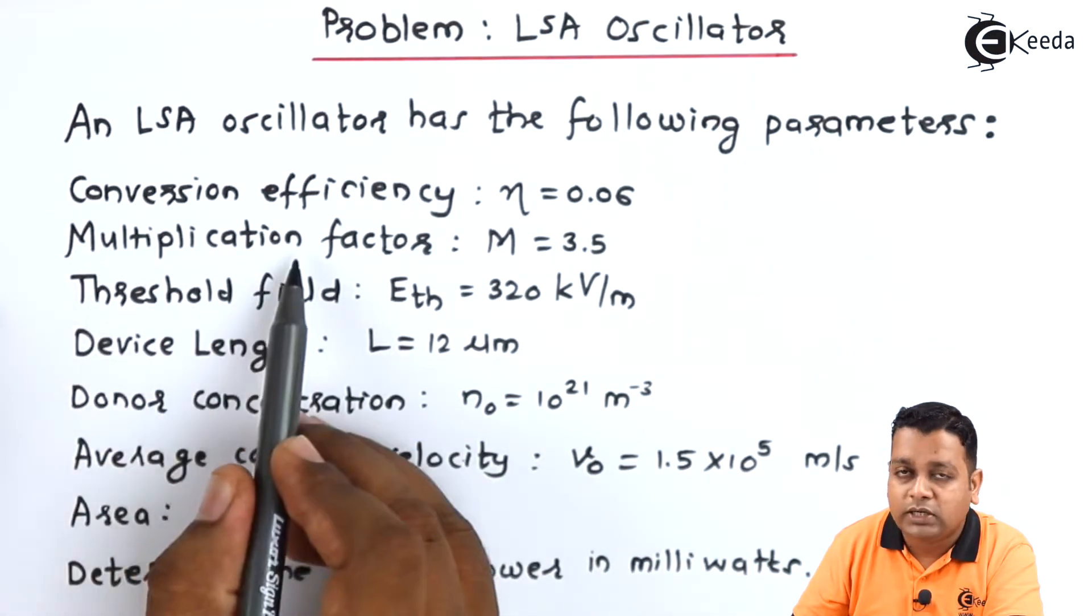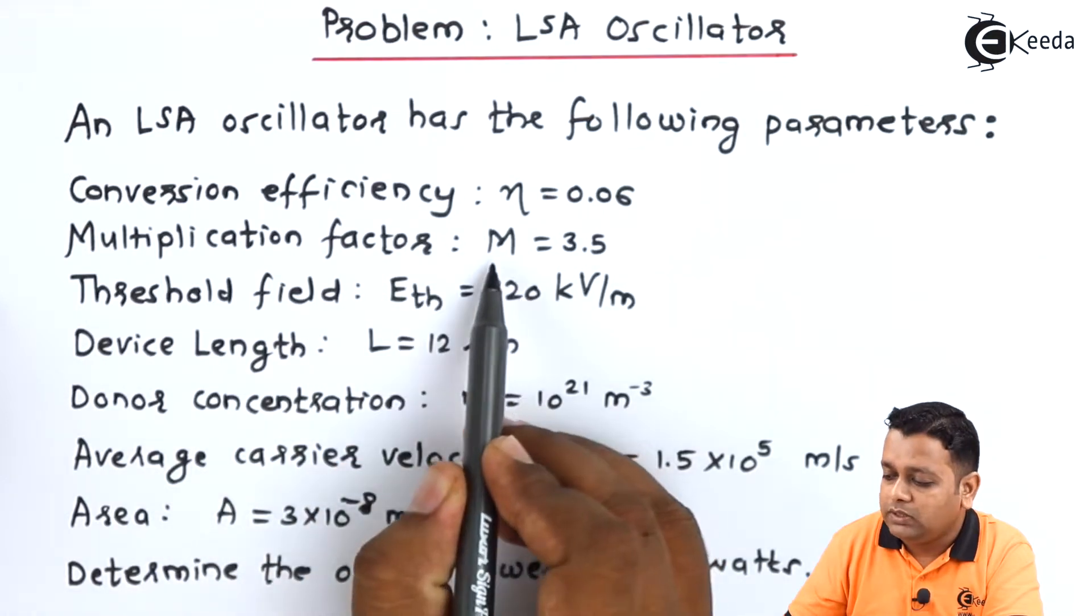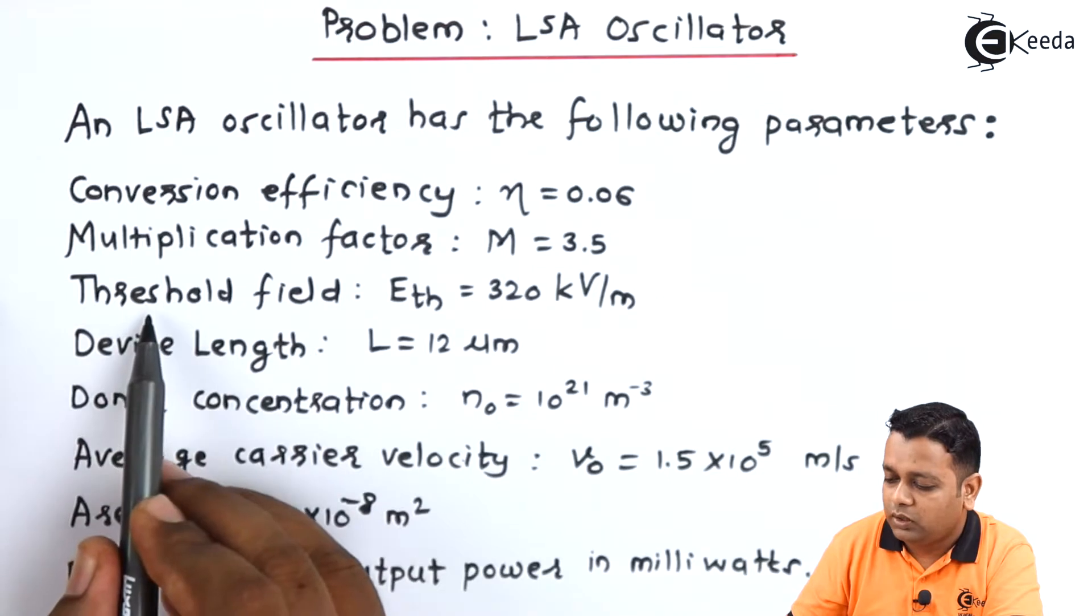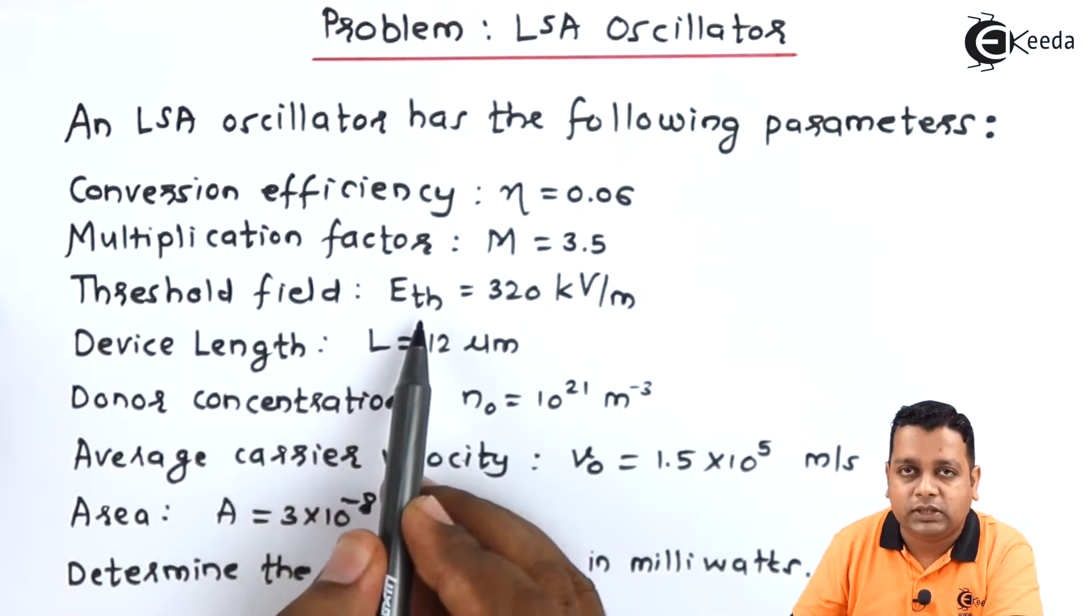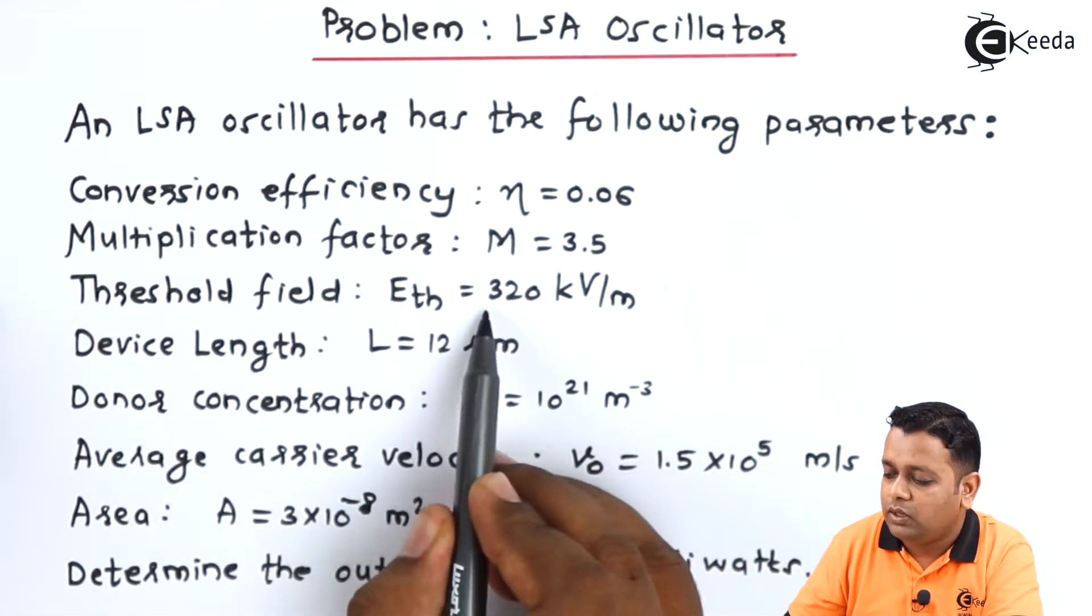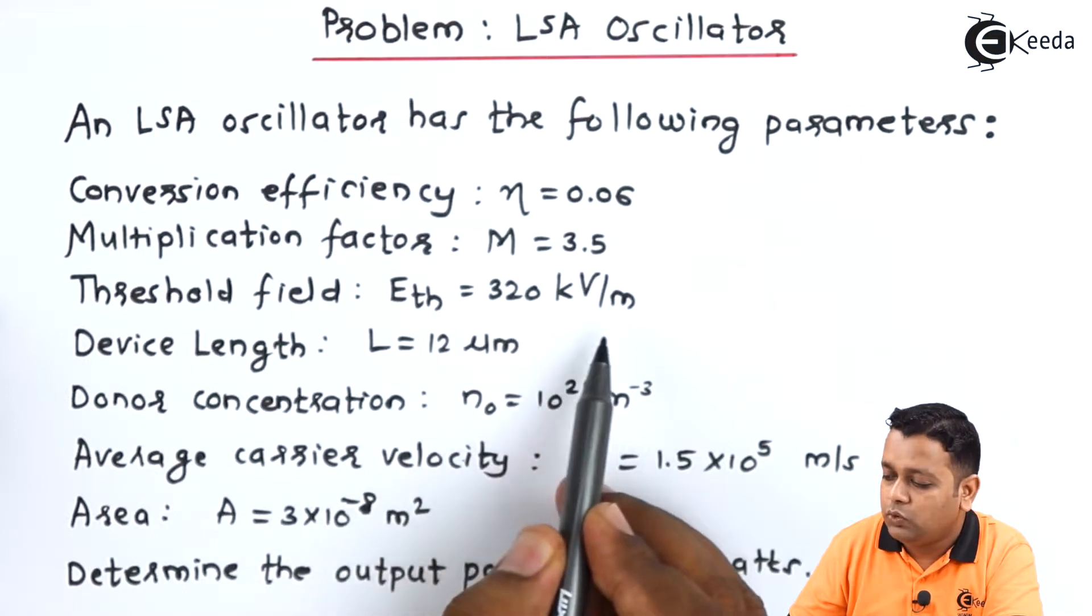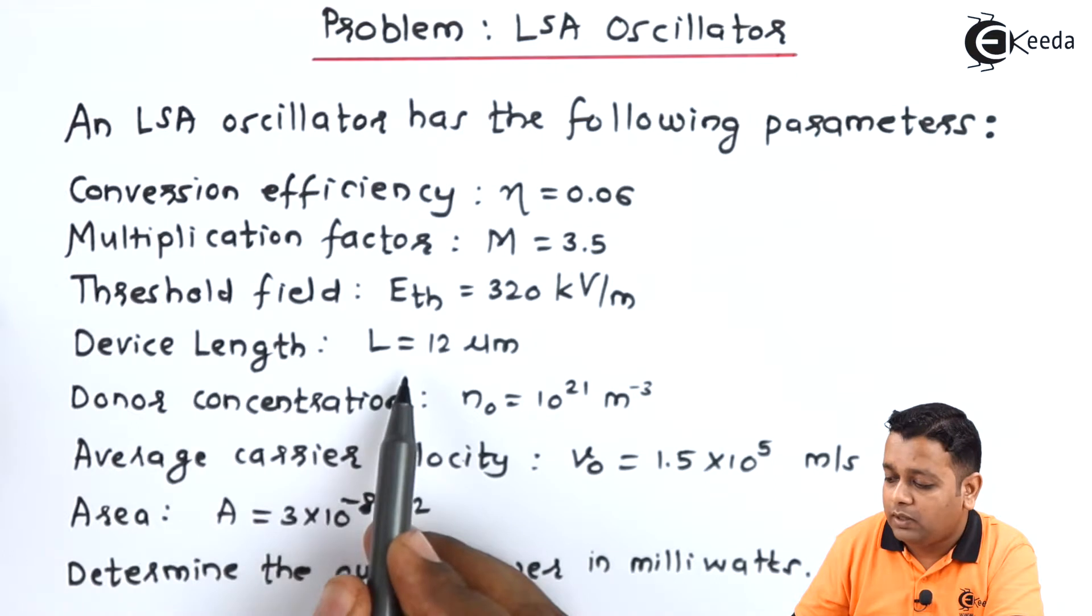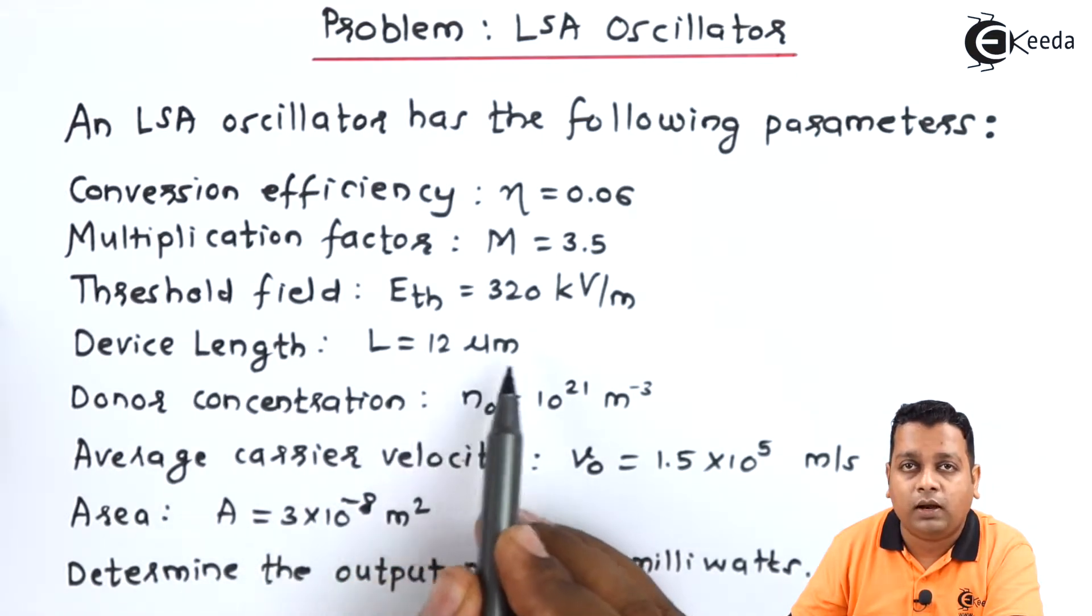There is a multiplication factor represented as capital M. The threshold field E_TH is having the value 320 kV per meter. The device length is represented by capital L holds the value 12 micrometers.